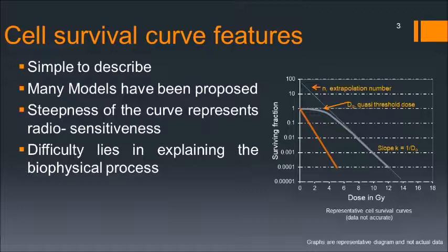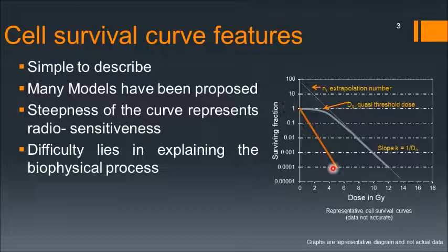The cell survival curve has some advantages. Number one, it is very simple to describe. Many models have been proposed based on the cell survival curve. The steepness of the curve represents the radiosensitivity. For example, this curve is not that steep, whereas this one is very steep. So the steepness of the curve actually represents the radiosensitivity.